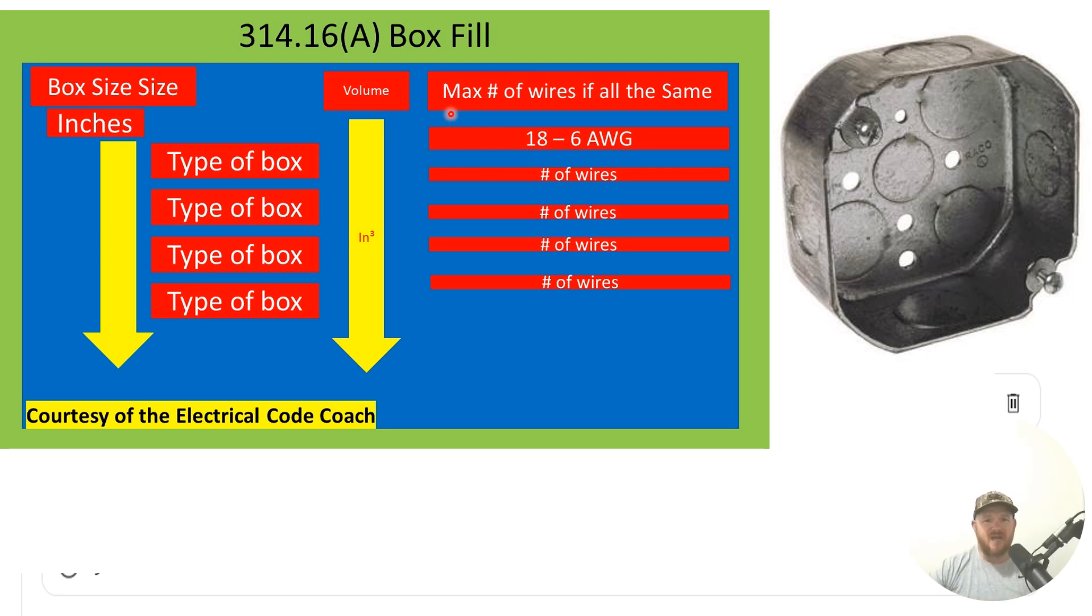And across the top we read that this is our maximum number of wires if they're all of the same size. So if you have all 10s or all 12s you can actually use this little cheat sheet table right here to make it even easier. You would start on the left hand side and find your box size which ours is four by one and a half.